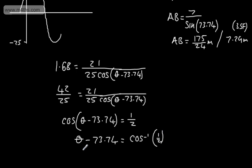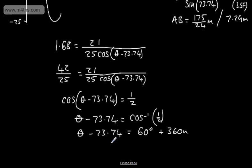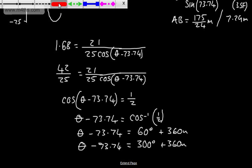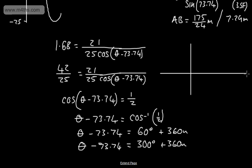So that gives us that theta minus 73.74 is equal to 60 degrees plus multiples of 360 degrees. We can also consider by symmetry, which we're going to need to do, given this is 73 degrees, 73.74 will be equal to 360 minus 60, which is 300, plus multiples of 360. I'd actually prefer just to draw the cosine curve and solve it from here, as this should be fairly straightforward, given that theta is between 0 and 150.